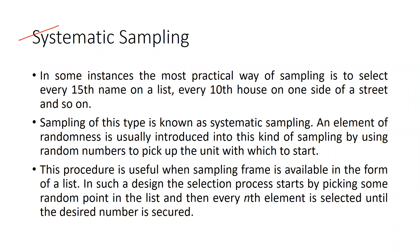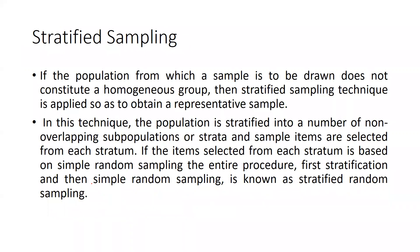An element of randomness is usually introduced into systematic sampling by using random numbers to pick the unit with which to start. This procedure is useful when a sampling frame is available in the form of a list. The selection process starts by picking a random point in the list, and then every nth item is selected until the desired number is reached.